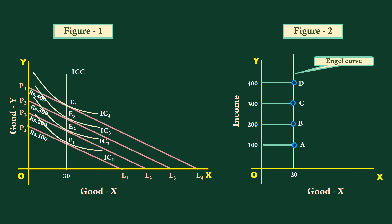It represents neutral good. Though the income increases from 100 rupees to 400 rupees, the same quantity, 20 units, is purchased.